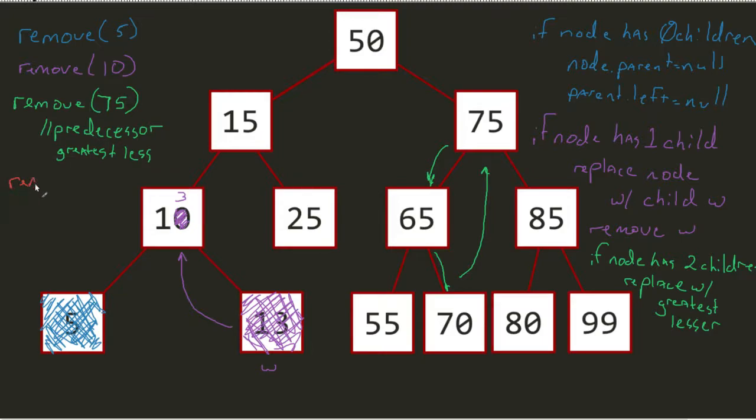So this time we'll do a remove on 75 using the successor model. We're looking for the least greatest. Since we're looking at the subtree of 75, we see I've got three nodes. What's the least greatest? In that case, it's the 80. And we would replace with the 80.